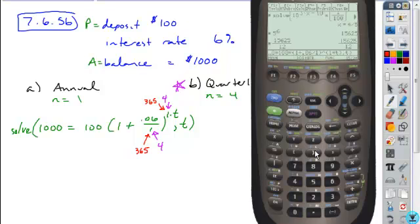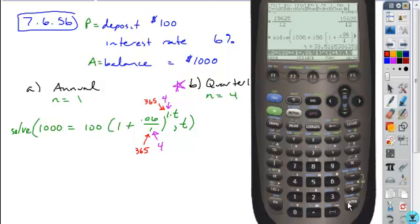And I'm solving for T. So when I hit enter, I get my answer to be approximately 39.5 years.